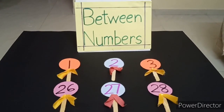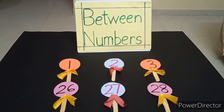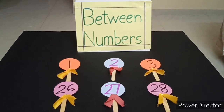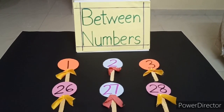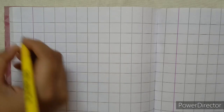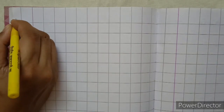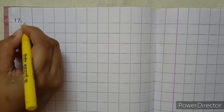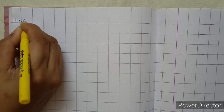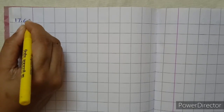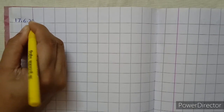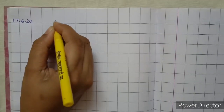So children, you came to know how to write between numbers. Now, children, let's start writing between numbers. First, we will write the date. Start from the corner. Write down seventeen dot six dot twenty.